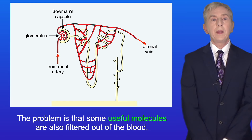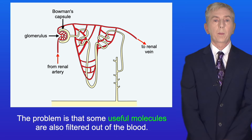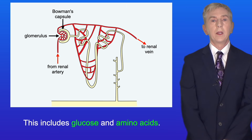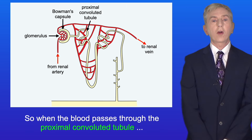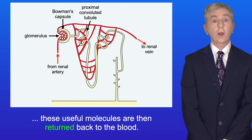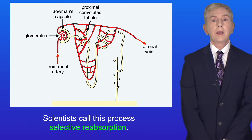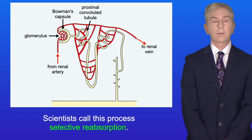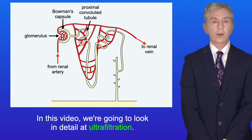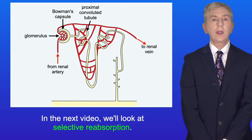The problem is that some useful molecules are also filtered out of the blood. This includes glucose and amino acids. So when the blood passes through the proximal convoluted tubule, these useful molecules are returned back to the blood. Scientists call this process selective reabsorption. In this video we're going to look in detail at ultrafiltration, and in the next video we look at selective reabsorption.